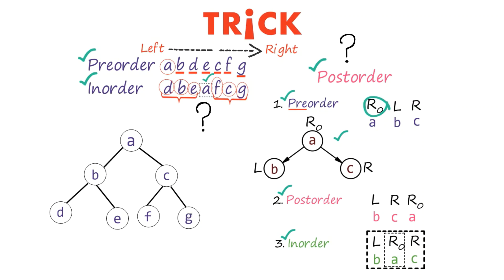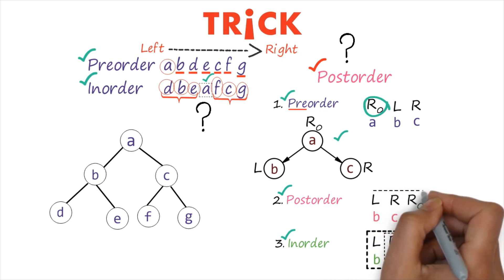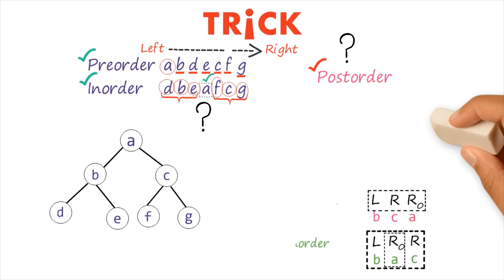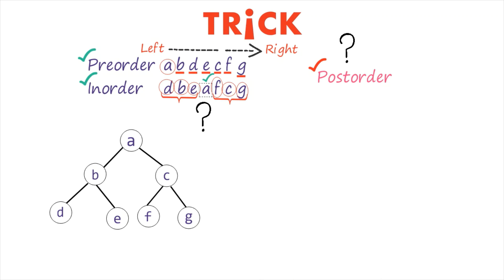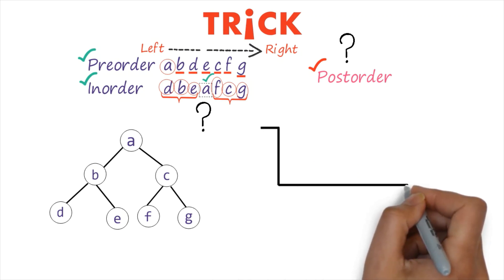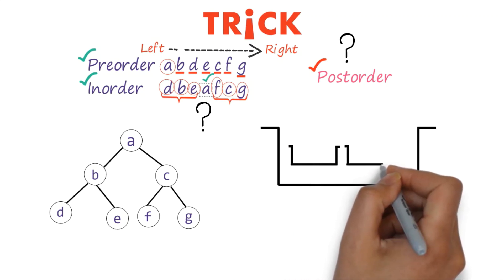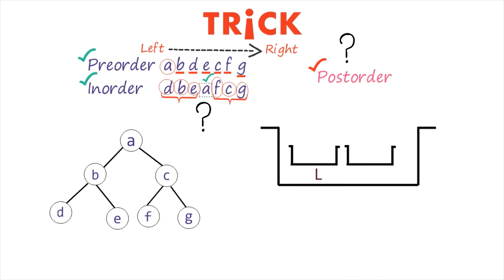Now your actual question is to find out the post-order traversal. Here is a wonderful trick. The formula for post-order traversal is left, right, root. To convert this tree into post-order, consider the entire tree inside one bucket, where you have a bucket for the left subtree, a bucket for the right subtree, and the root. The root of the tree is A.